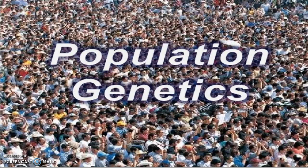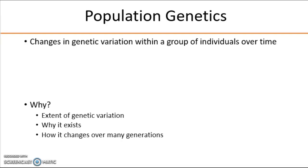Let's consider the idea of population genetics. So up until now, we've been talking about genes in individuals and how they can affect them. Let's talk about how genes fluctuate in a population and what that means. Population genetics is changes in genetic variation within a group of individuals over time. Population geneticists study this because they want to know the extent of that genetic variation, why it exists in that population, and how it changes over many generations.